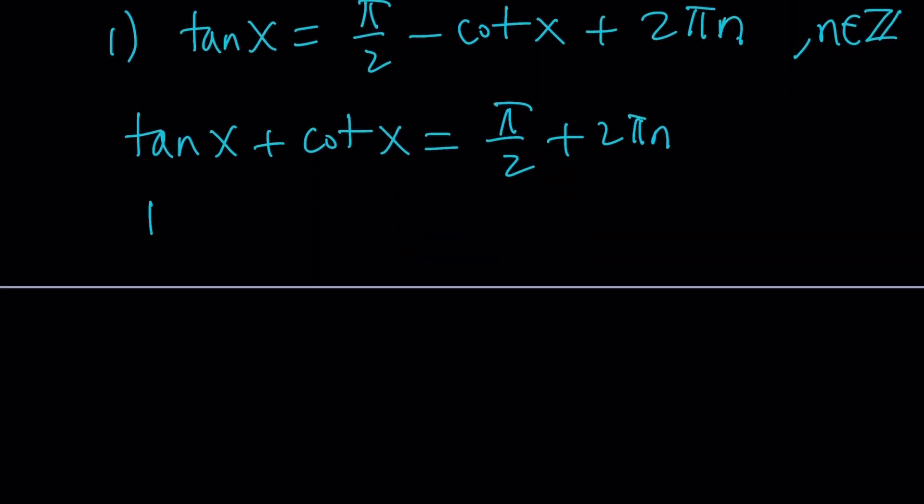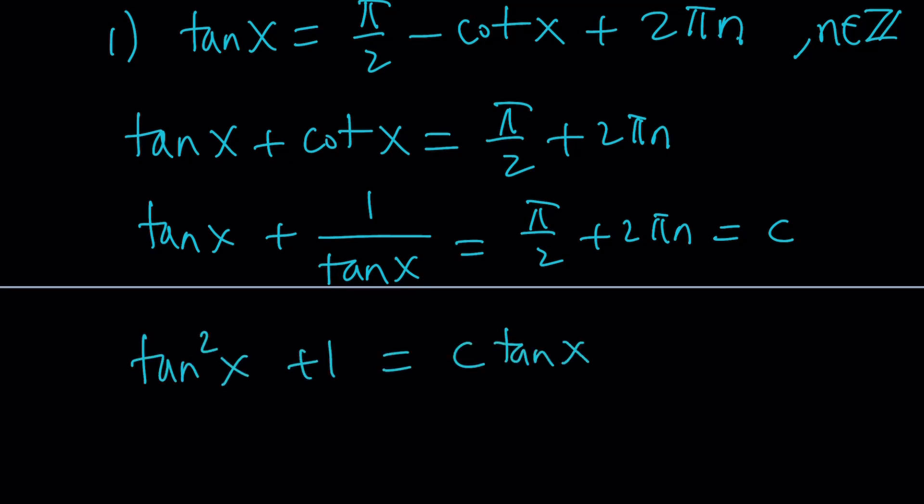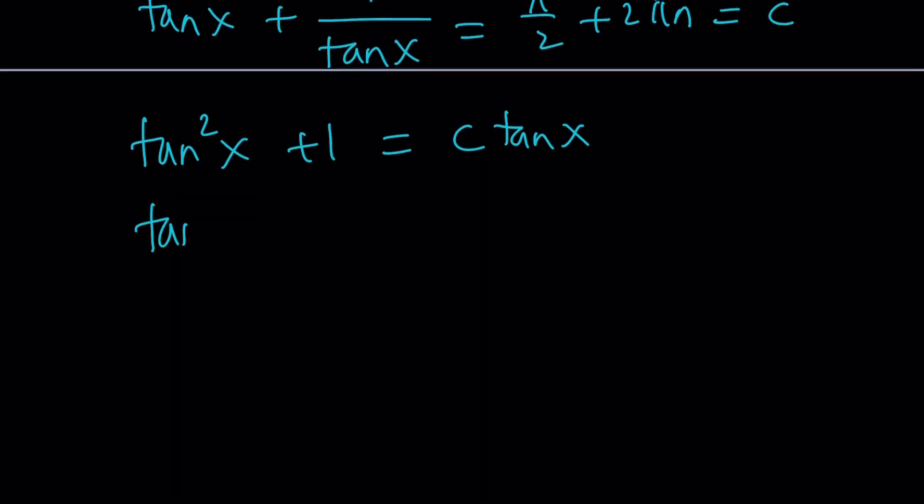And then we're going to get something like this, and then we should be solving for x. But we have a tangent and a cotangent, but they're reciprocals. So I can write it as tangent x plus 1 over tangent x equals this. And I can basically multiply everything by tangent x and turn this into a quadratic. But let's go ahead and call this c, c is a constant. And then once we multiply, we get tangent squared plus 1 equals c tangent x.